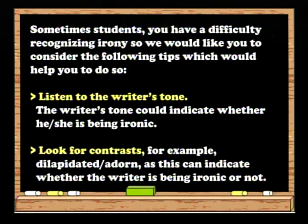Sometimes, students, you have difficulty recognizing irony, so we would like you to consider the following tips which would help you to do so. Listen to the writer's tone. The writer's tone could indicate whether he or she is being ironic. Look for contrasts, for example, 'dilapidated' and 'adorn,' as this can indicate whether the writer is being ironic or not. We will continue to look at figures of speech in our subsequent lessons.